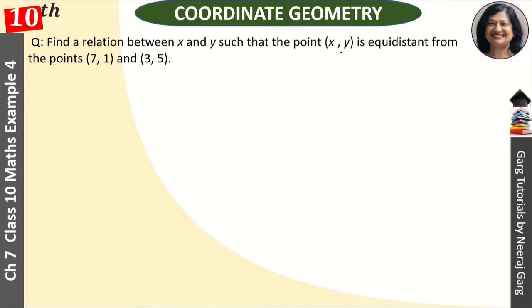So we take three points: point P, point A, and point B. The question states that P is equidistant from A and B, meaning PA is equal to PB.